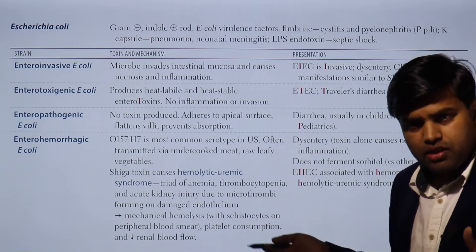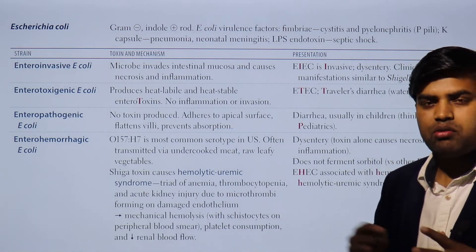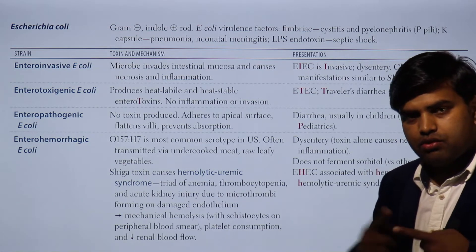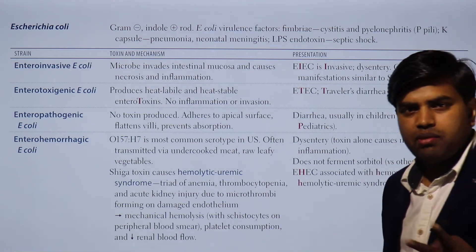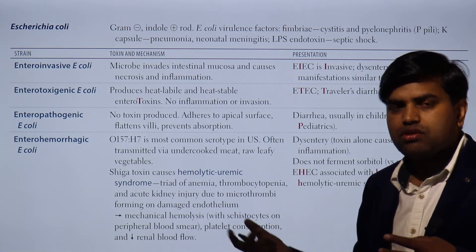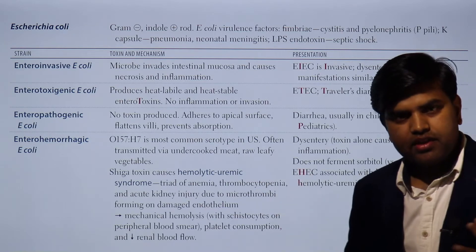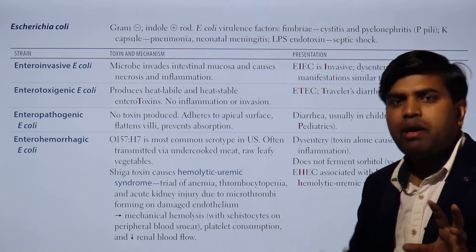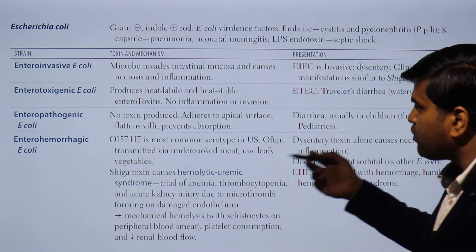These three disease mechanisms — fimbriae causing UTI, capsule causing pneumonia and meningitis, and LPS causing septic shock — apply to all gram-negative bacteria. E. coli also has exotoxins. Remember these three headings: organism virulence factors, endotoxin, and exotoxin. If you remember these three categories, it is easy to recall all diseases E. coli can produce.